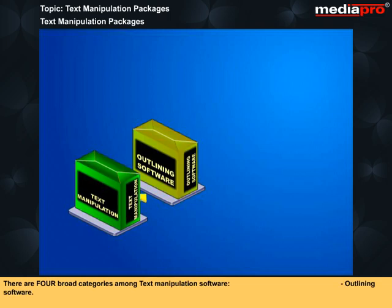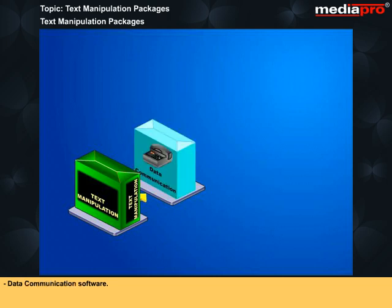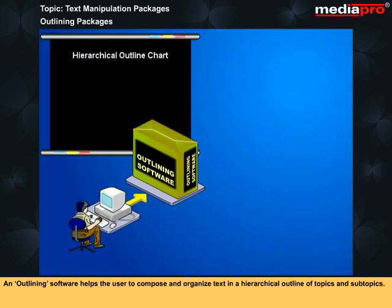There are four broad categories among text manipulation software: outlining software, word processors, desktop publishing software, and data communication software. An outlining software helps the user to compose and organize text in a hierarchical outline of topics and subtopics.